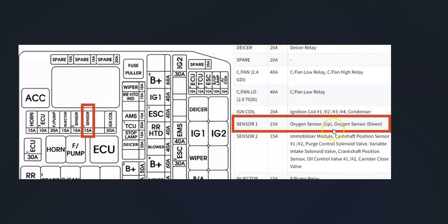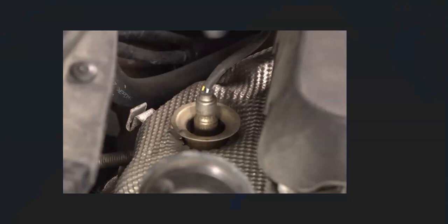For example, this is a 2014 Sonata, and as you can see right here it has oxygen sensor up, oxygen sensor down, sensor one, which would be right here. So if that blew, there would be an issue. So that's something to keep in mind.